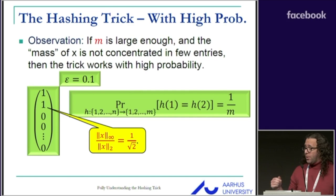What do I mean by the mass of X is distributed nicely? If you look at this example, this vector has two coordinates which are heavy, and by heavy I mean with respect to the total mass of X. The way to model this is the ratio between the L infinity norm and the L2 norm of X.